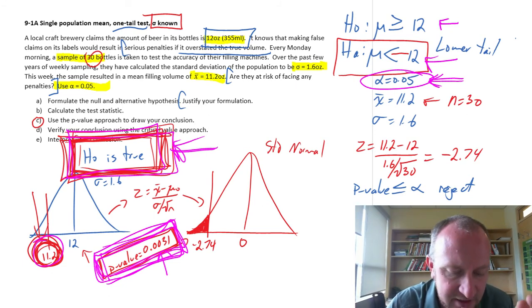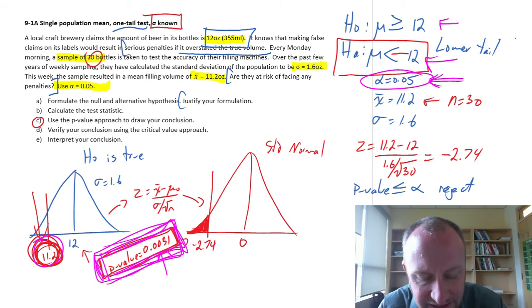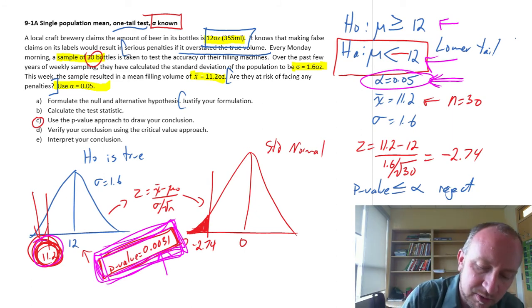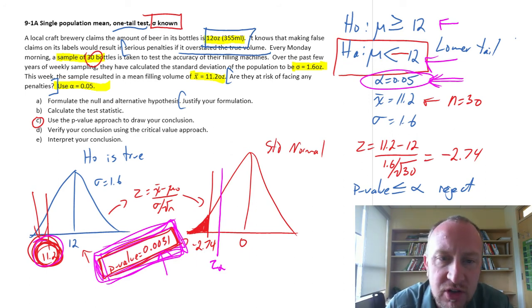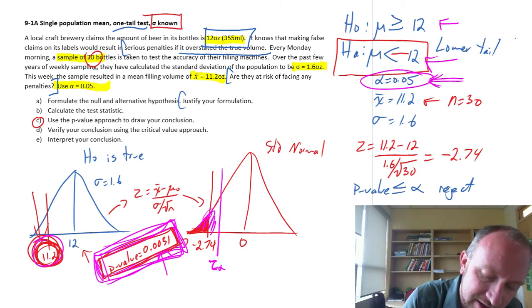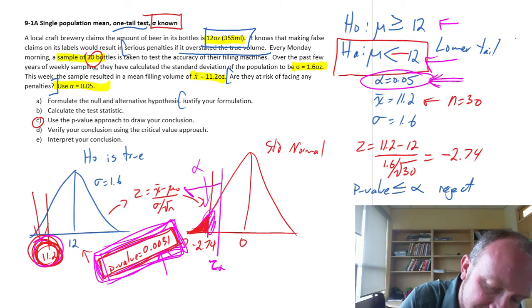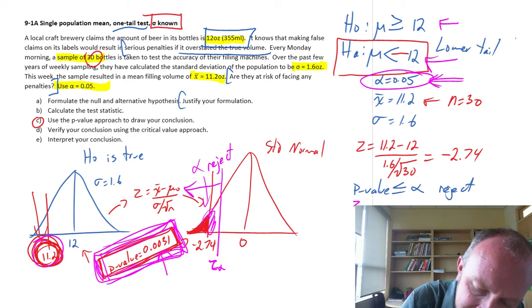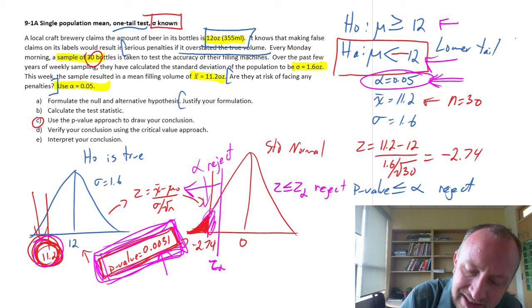Verify our conclusion using the critical value approach. This is just a redundant approach to hypothesis testing. Rather than using the p-value approach, we can use the critical value approach. What we'll be doing is just finding a value for Z that corresponds with alpha. We'll go to our Z tables, find the Z value that corresponds to an area in this lower tail equal to alpha, and that would then define our rejection space. If our test statistic is less than or equal to that critical value, then we will reject.